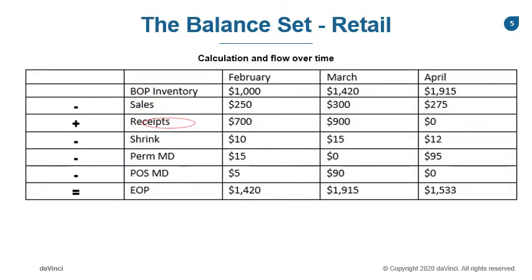As you can see in our example, our balance set is using months as our time period. Our starting period is February, where our BOP is $1,000. Our sales are deducted from the inventory, so we are subtracting out $255. We add $700 in receipts since it's your gain to inventory. We subtract $10 for shrink and $20 for the total markdowns combined.